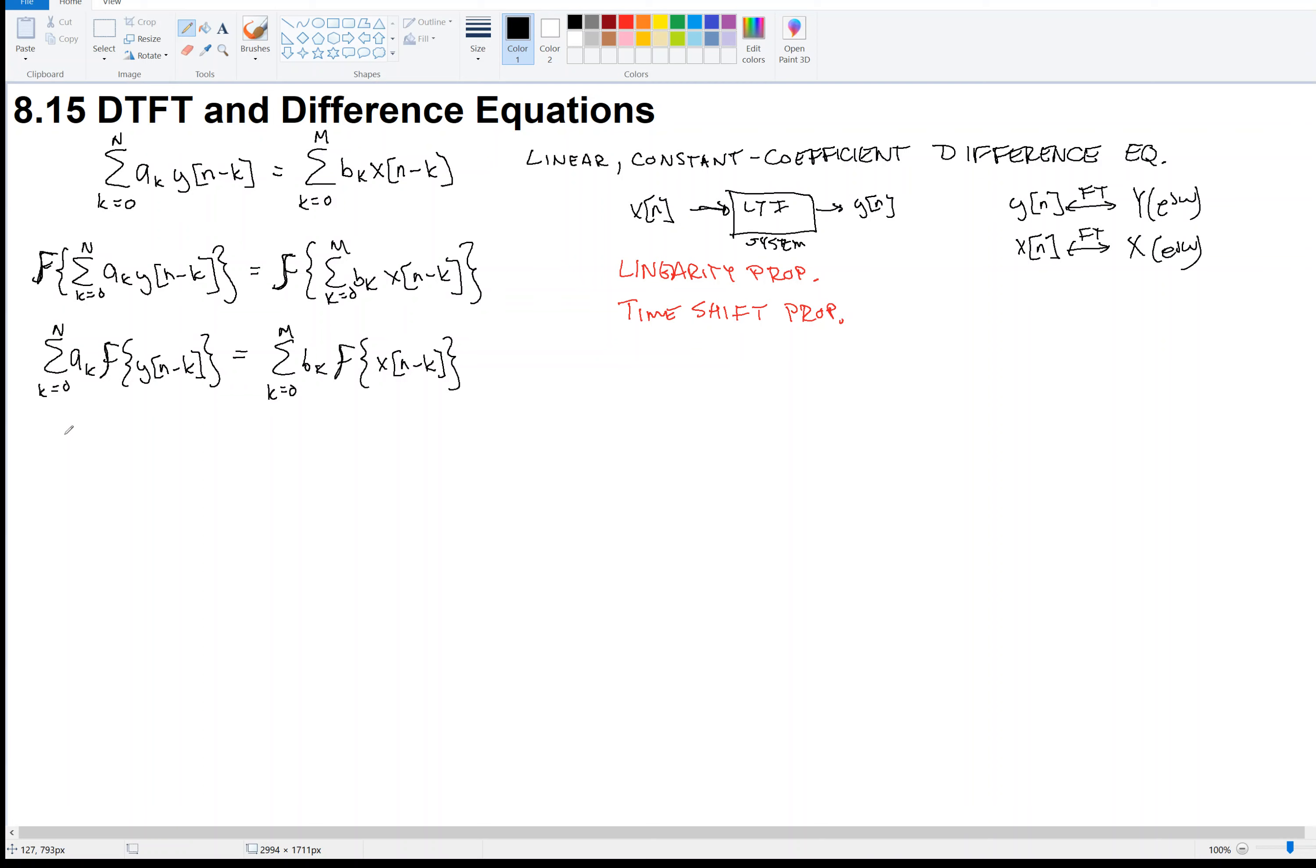So now I have a sum here, ak. So the Fourier transform of y delayed by k is y's transform times e to the minus j omega k equals over here. Over here, I've got the bk's. The Fourier transform of shifted versions of x is x's original transform times this phasor, e to the minus j omega k. So remember that shifting does not change the magnitude of the Fourier transform, it just changes its phase by tacking on that phasor right there, e to the minus j omega k.